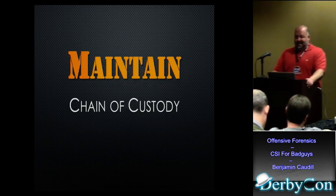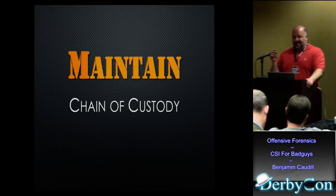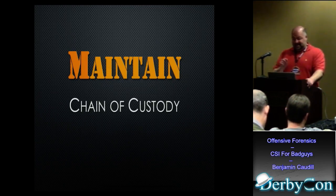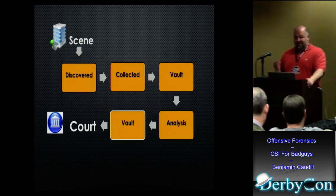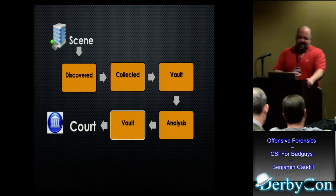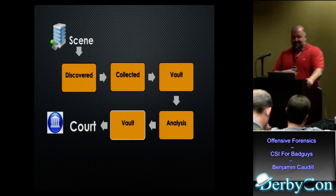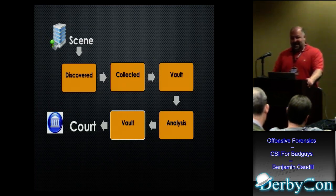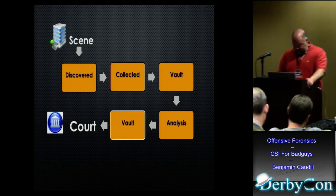Maintain a chain of custody. The courts need to know, in order to allow evidence in, that it has been in someone's care, custody, and control from the time it was found until the time it's presented in court. Every step — who found it, who collected it, who took it to the evidence repository, who got it out of the vault, who started the analysis, who took it to court — all that has to be painstakingly documented. If the chain of custody is broken, it will not make it to court.